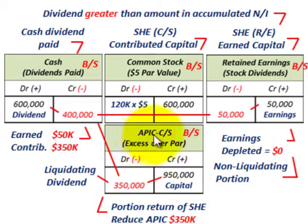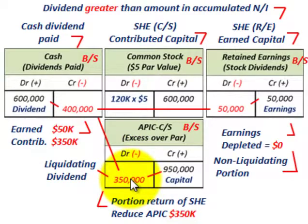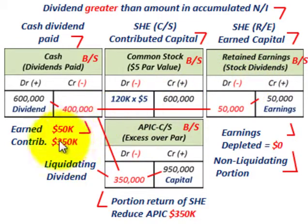The other portion again comes from additional paid-in capital to common stockholders. We had $950,000 sitting there, so the balancing amount — $350,000 — comes out of that account. We debit additional paid-in capital for $350,000, which is the portion being returned from stockholders' equity. So the $400,000 cash dividend is split: $50,000 from earned capital and $350,000 from contributed capital out of additional paid-in capital.